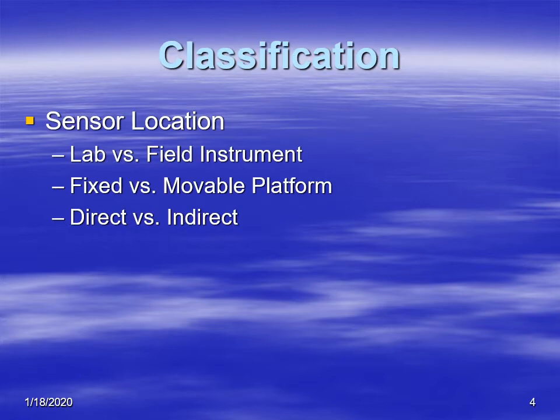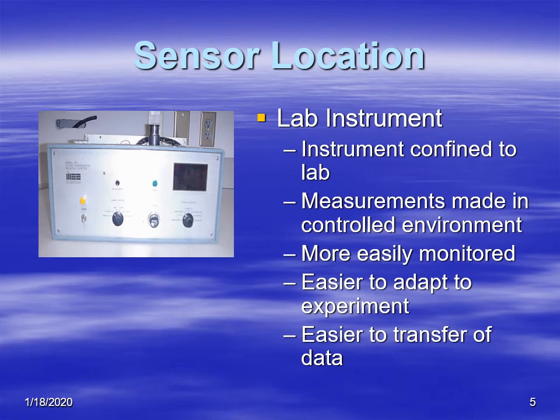Let's take a look at the first classification: location. Location can be further subdivided into whether it's a lab or field instrument, a fixed or moving platform, or whether it makes direct or indirect measurements. A lab instrument is one that makes measurements inside a lab, which is typically a very controlled environment where the elements are not changing rapidly, making it convenient and easy to work with.